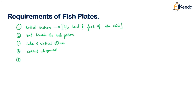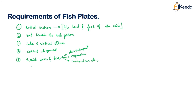The fifth requirement is it should be able to resist all types of wear and tear — for example, due to impact and due to expansion and contraction. The sixth requirement is it should provide easy means for renewal and replacement whenever required. We should be able to easily replace and renew the fish plate.